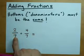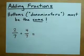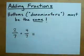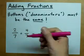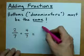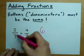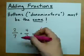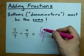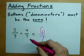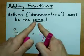2 over 7 plus 4 over 7. The bottoms are the same. Good stuff. What you do is you add the tops 2 plus 4 and you keep the bottom. There you go. 2 sevenths plus 4 sevenths gives 6 sevenths. Top plus top, keep the bottom because they have to be the same.